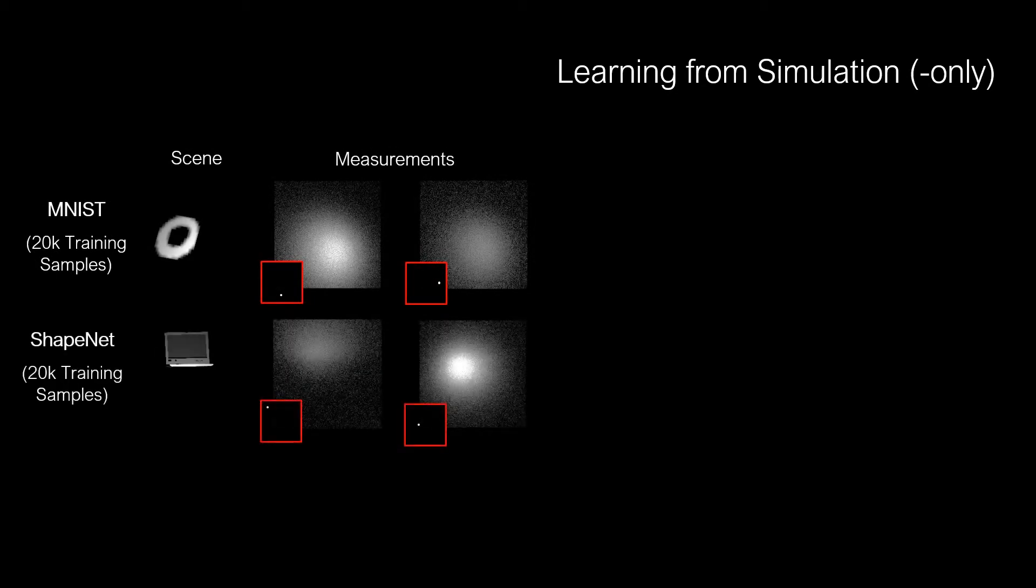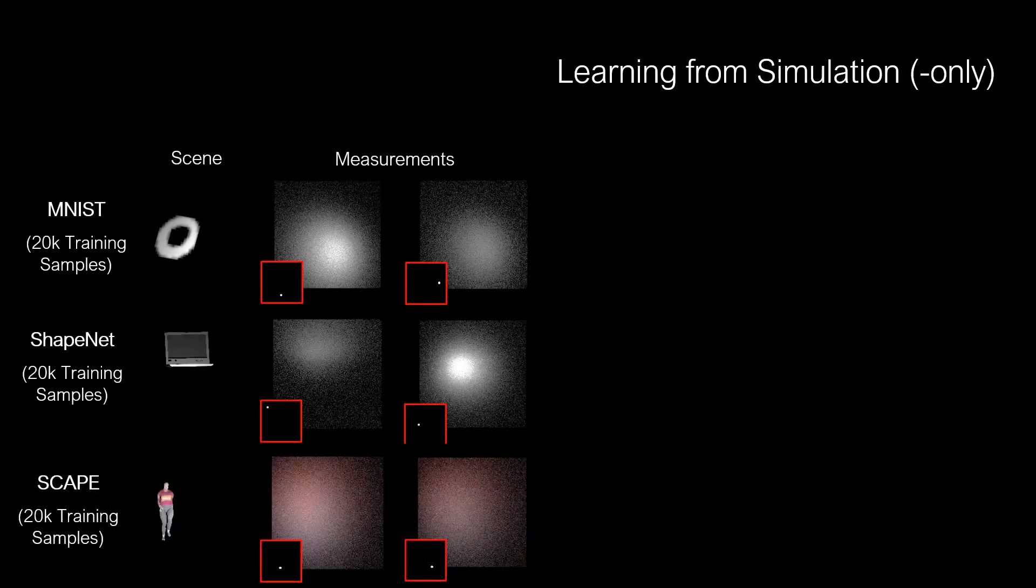Using efficient rendering, we train our model on large synthetic training datasets. Specifically, we use the MNIST character dataset, ShapeNet, and the SCAPE human dataset for training.